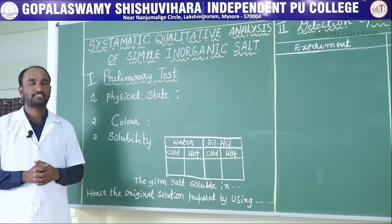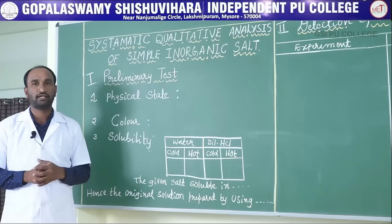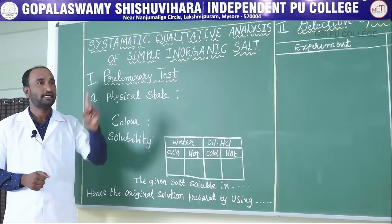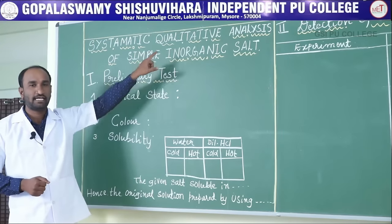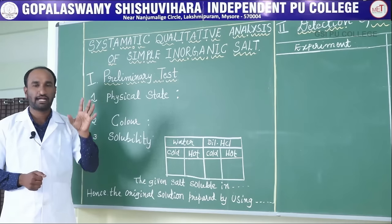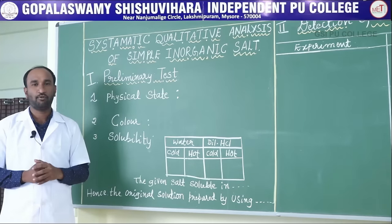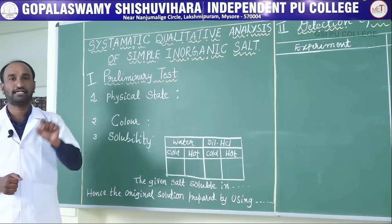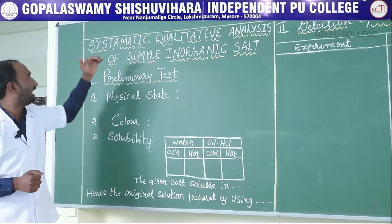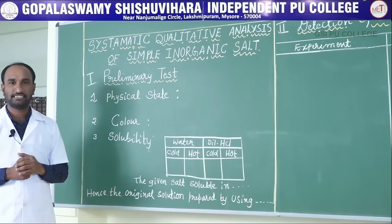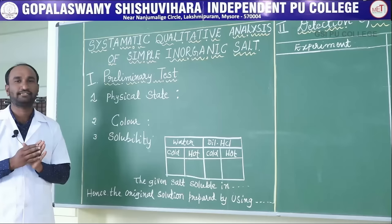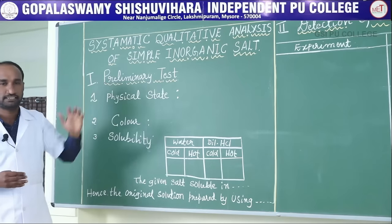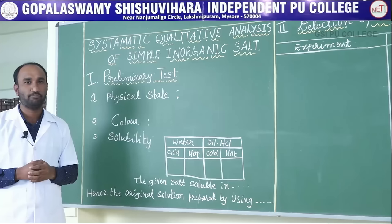Good morning students. Today in class we will discuss the systematic qualitative analysis of a simple inorganic salt. This is a branch of qualitative analysis. A simple inorganic salt contains one cation and one anion — one acid radical and one basic radical. We need to detect these radicals systematically, step by step: first, the preliminary step; second, detection of the acid radical; and third, detection of the basic radical.